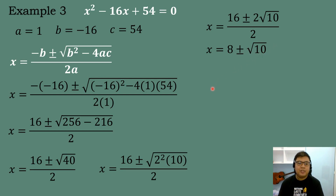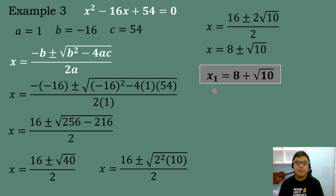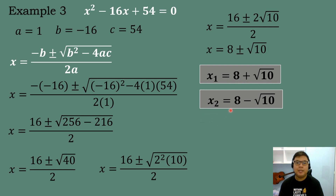The two roots of the quadratic equation are: X sub 1 equals 8 plus the square root of 10, and X sub 2 equals 8 minus the square root of 10. Therefore, the two roots of X squared minus 16X plus 54 equals 0 are 8 plus the square root of 10 and 8 minus the square root of 10.